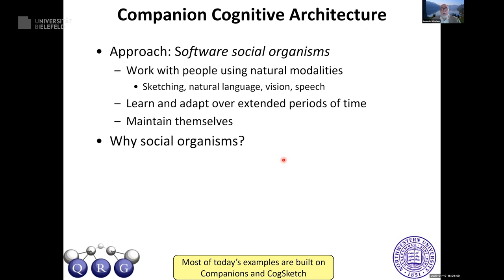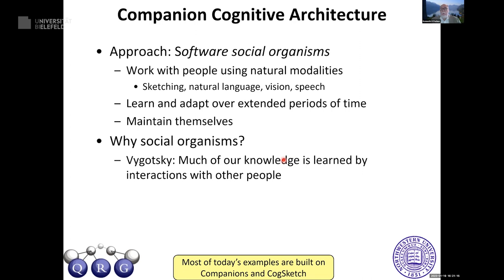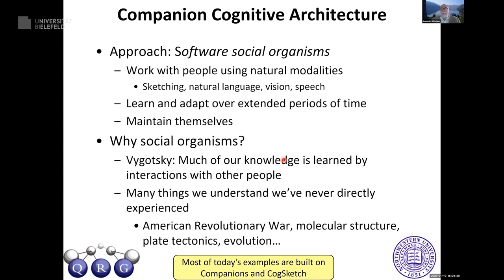Why social? Vygotsky in the 1930s pointed out that much of our knowledge is learned through interactions with other people. Robots can gather knowledge about the physical world, but there's also the social, mental, and cultural world. Many things we understand we've never directly experienced — the American Revolutionary War, molecular structure, plate tectonics. These are an important part of being a human being in our culture, which is why I think social organisms are the best way to bootstrap AI.